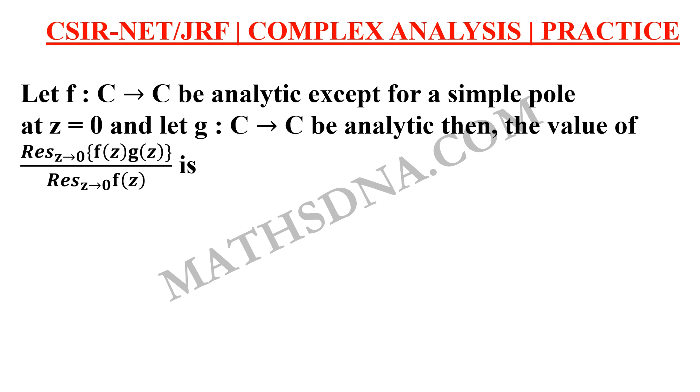And let G from C to C be analytic. Then the value of residue of Z tends to 0 F(Z)G(Z) upon residue of Z tends to 0 F(Z) is and the options are A: G(0), B: G'(0), C: limit Z tends to 0 F(Z) and D: limit Z tends to 0 F(Z) into G(Z). Comment your answer below in the comment box and solution of this question will be provided in the next video.